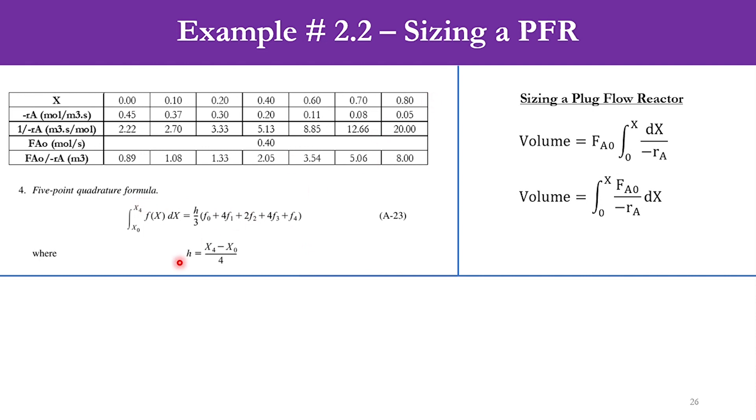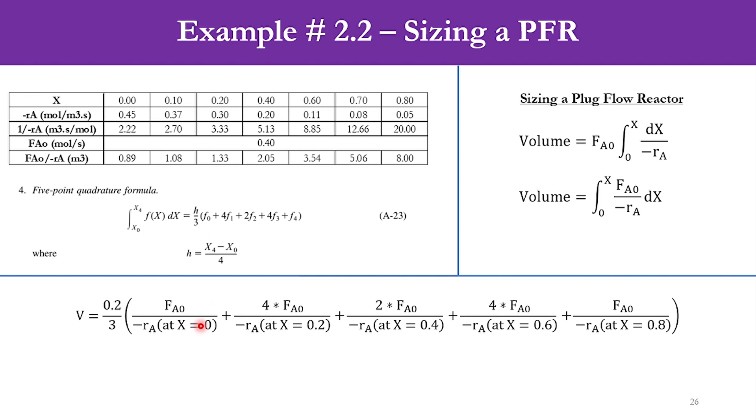Now we need to find the value of H. X4 minus X0 = 0.8 minus 0 divided by 4, which equals 0.2. This means each interval will be 0.2. F0 means FA0 over minus RA at x = 0, and F1 means FA0 over minus RA at x = 0.2.